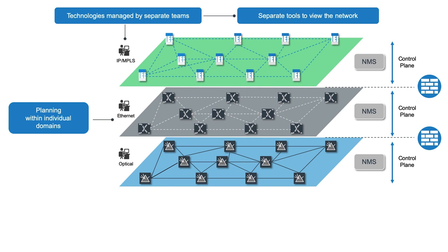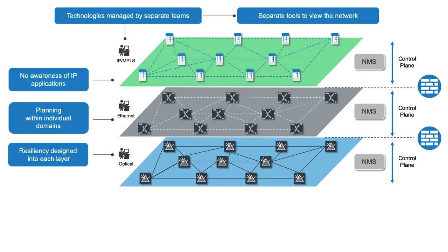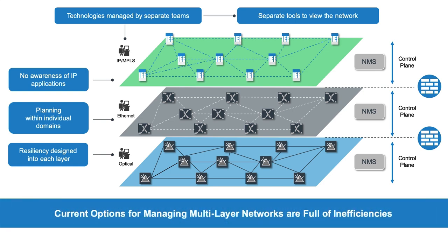As a result, it is most common for each layer to be maintained as a discrete entity with its own management tools, resiliency protocols and service definitions. IP and optical teams end up in silos with little coordination, split-level planning and manual handoffs. This structure creates a convenient division of labour but results in inefficiencies up and down the stack, leading to slow network upgrades and extended time to market for new services.